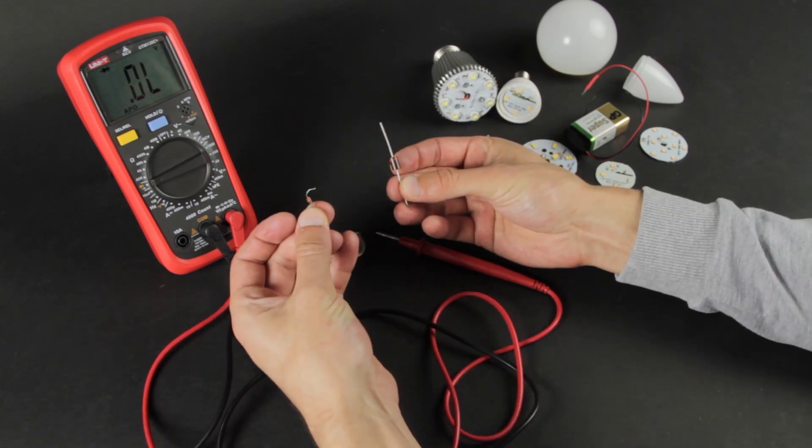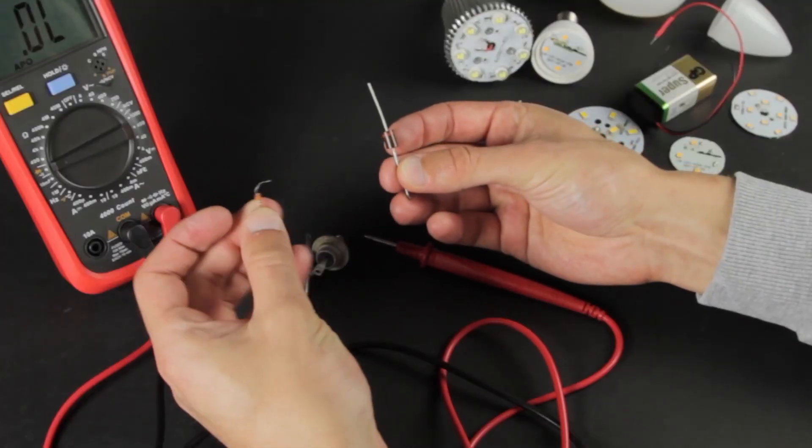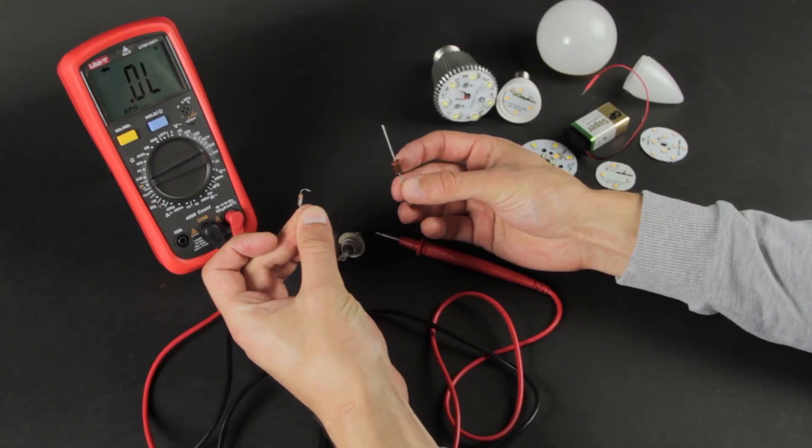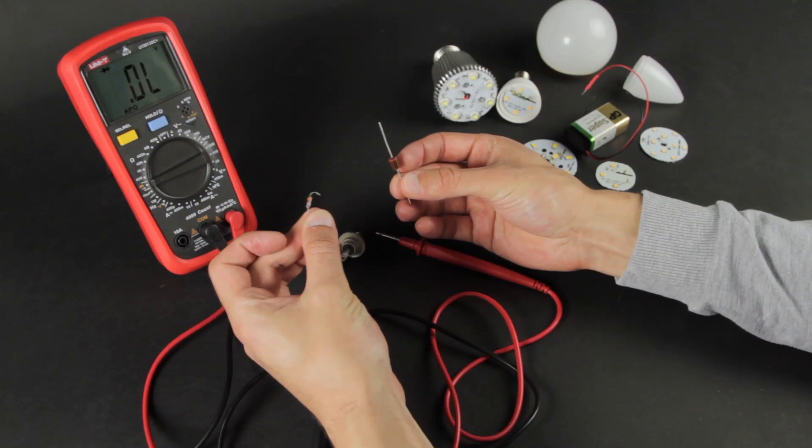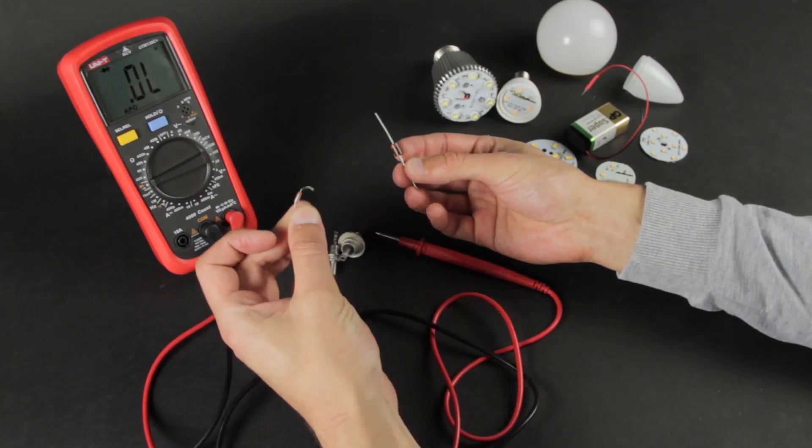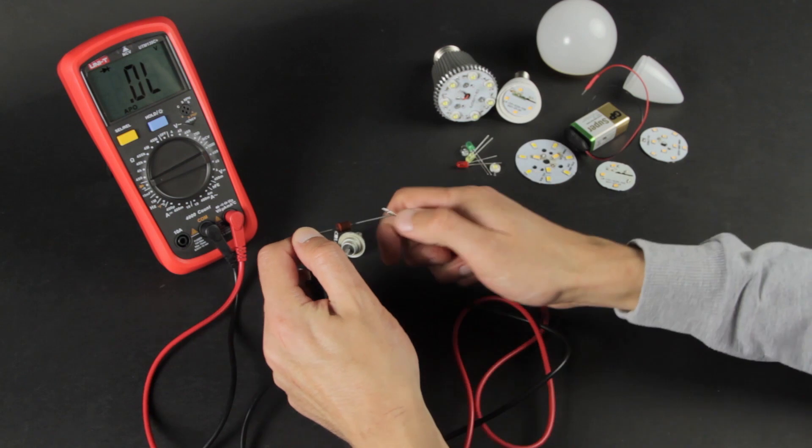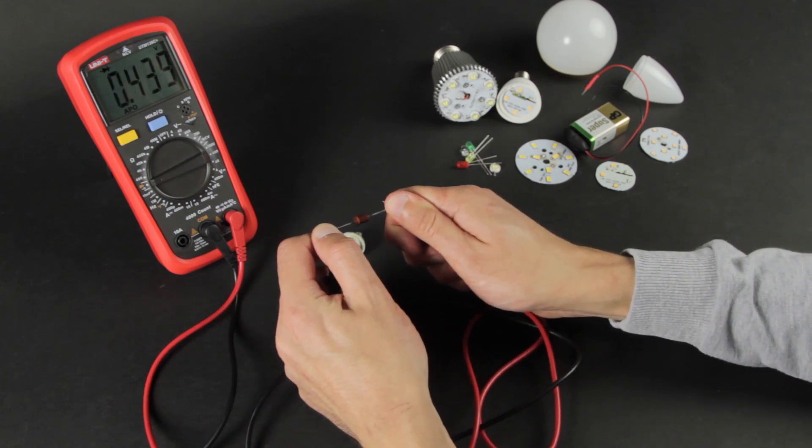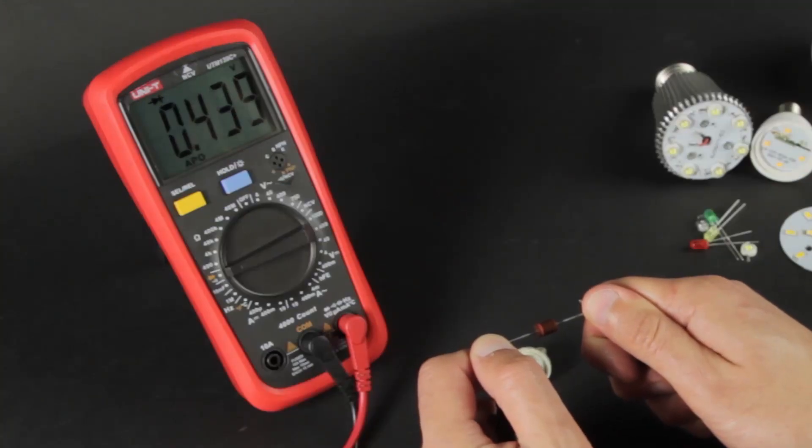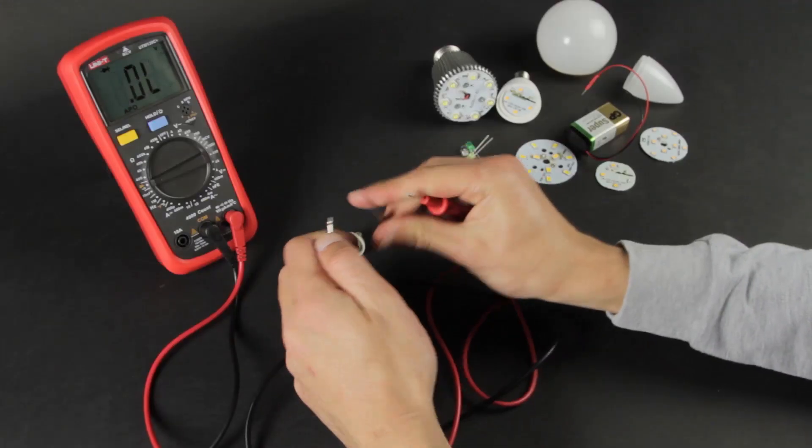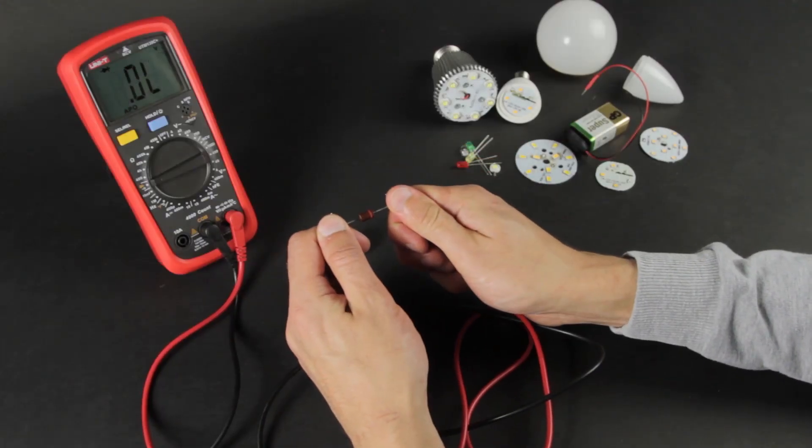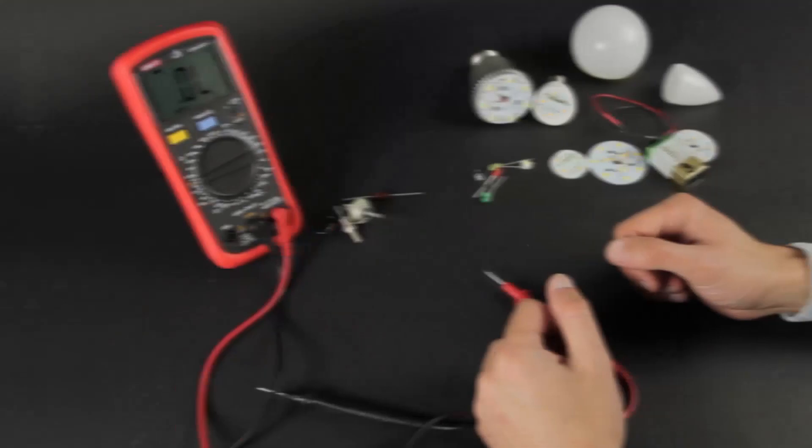There are diodes of different design. One like this and another type in glass housing called zener diodes. Testing procedure is the same. Negative to the cathode and positive to the anode. The cathode is marked with a colored stripe on some diodes. In case the diode is broken, it will let the current flow in both ways or not let it pass at all.